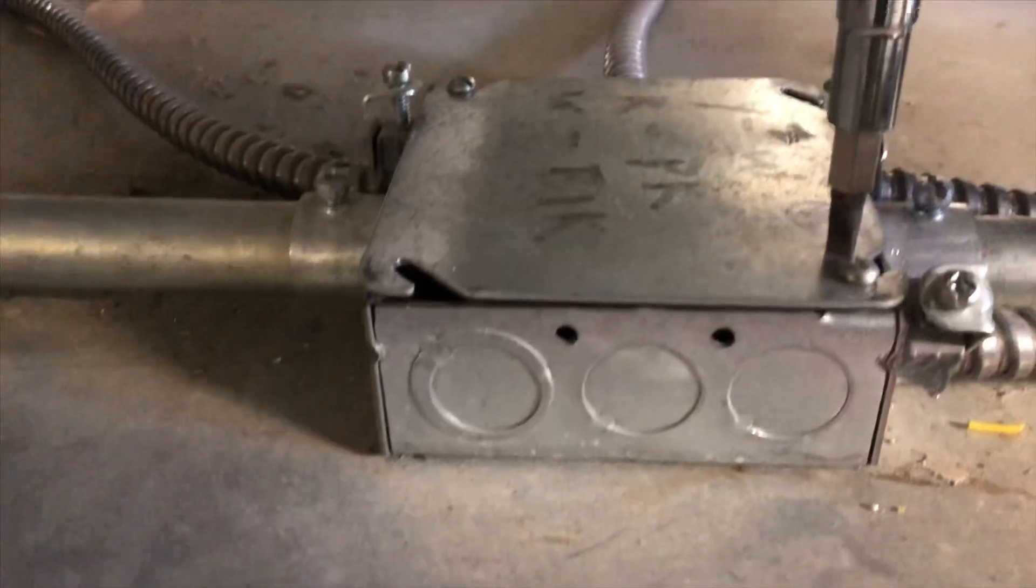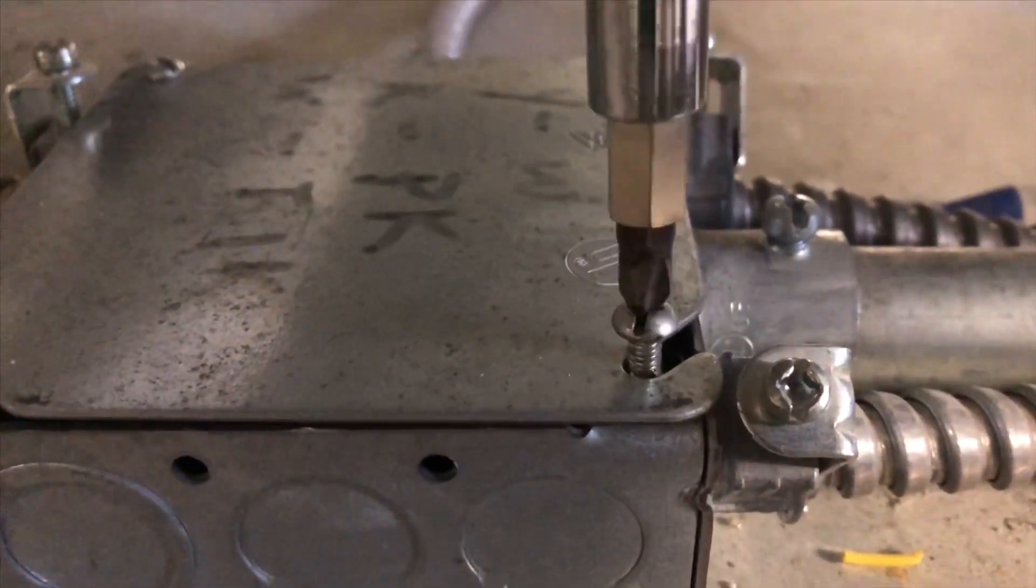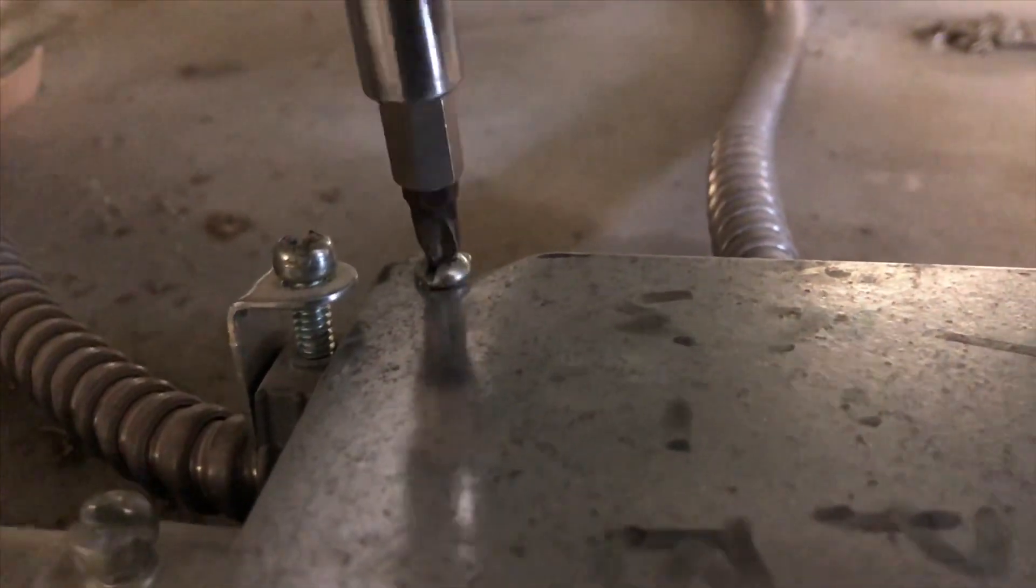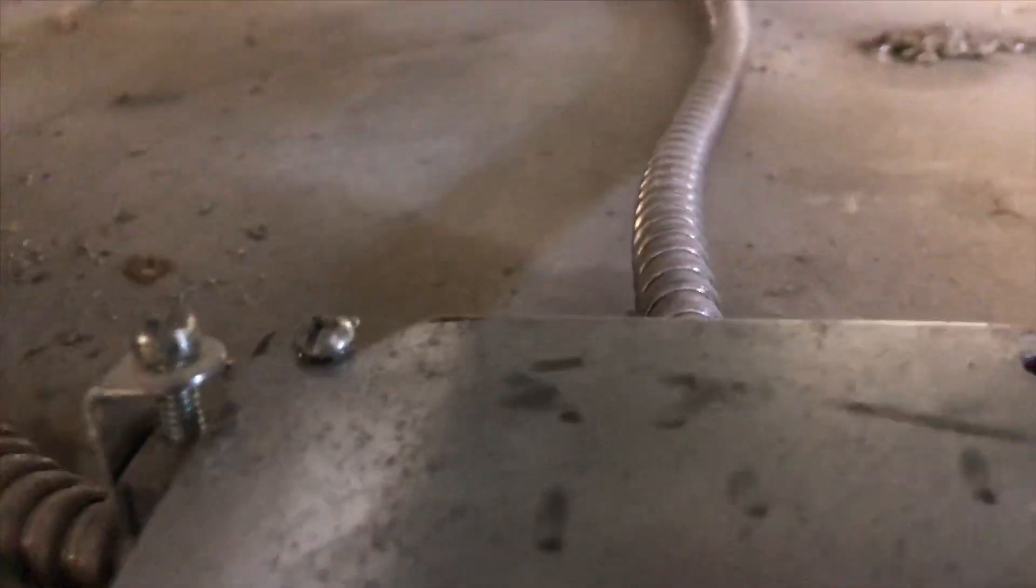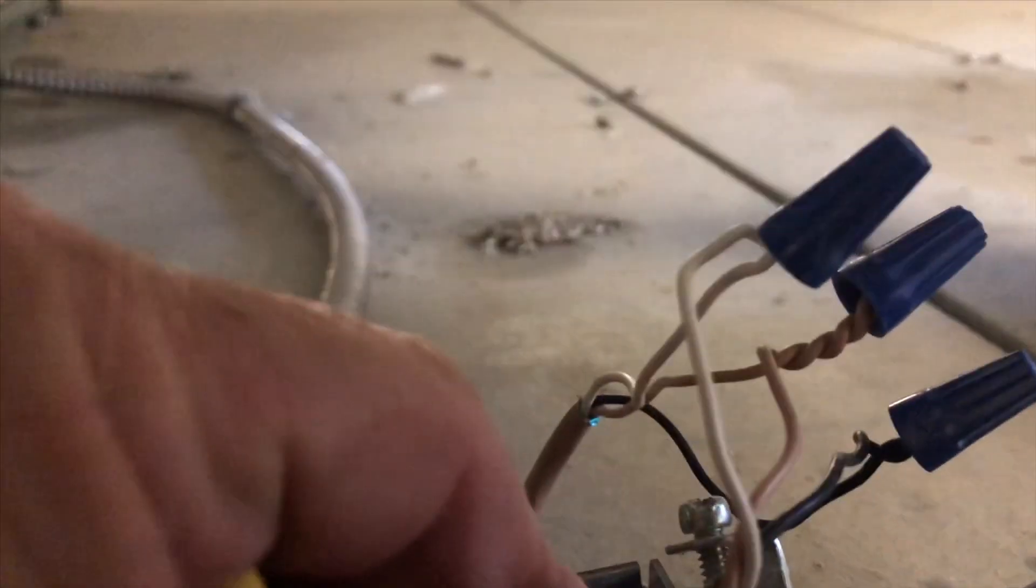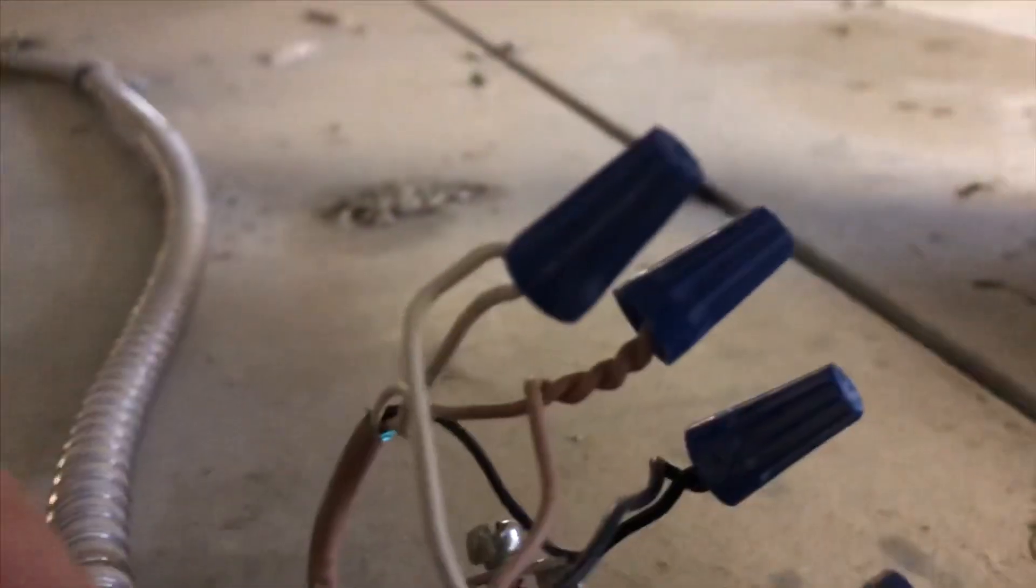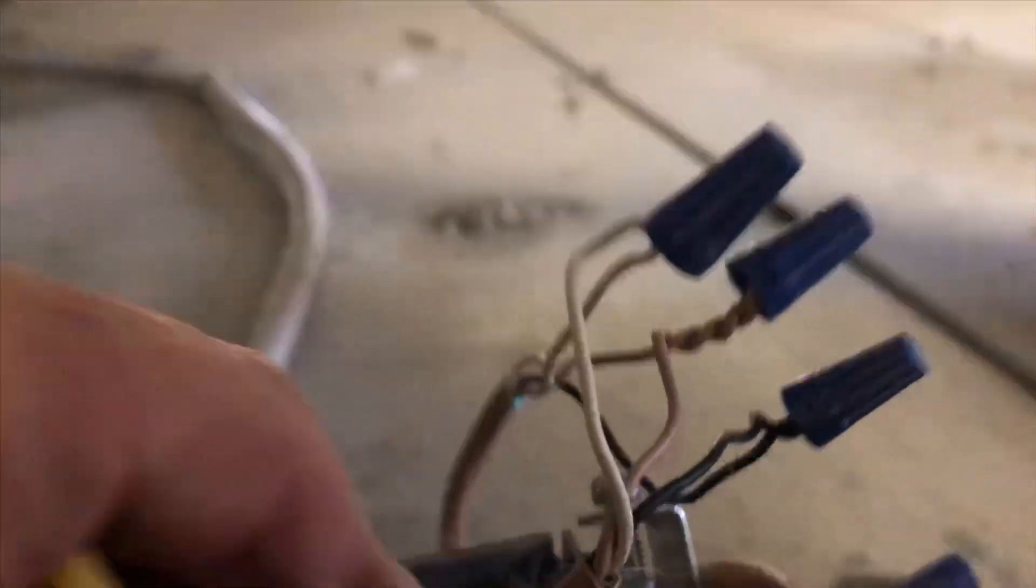Here's the junction box for the wiring, which we'll take off this cover. Got low voltage wires and the power is off. Here's the connection for the short jumper wire that goes to our actuator. Our new actuator comes with a short lead, which we're going to tie into these connections into this junction box.